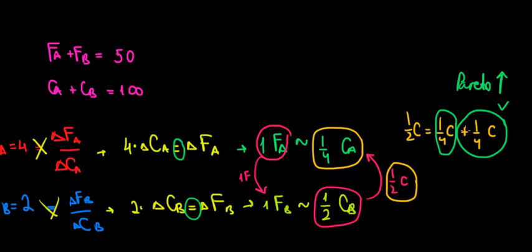N is getting a bit more clothing than she was requiring. Why? Because their valuations are different. N values clothing more than Bill, so Bill is willing to give up a bit more clothing to N because for him it's not that important. For Bill it's less important than for N — that's why there is room for trade.